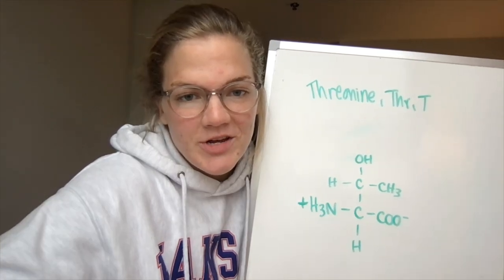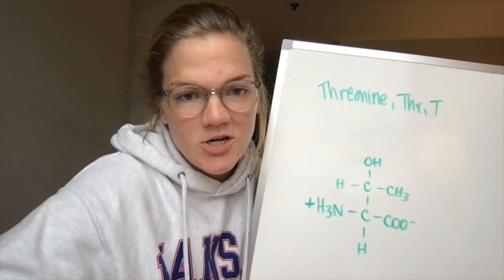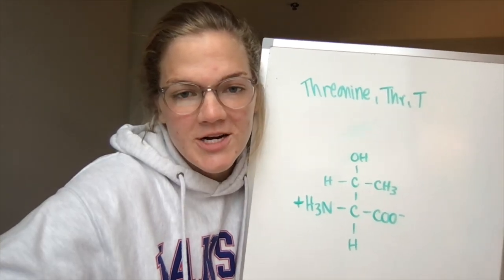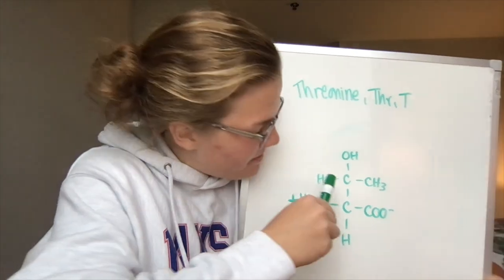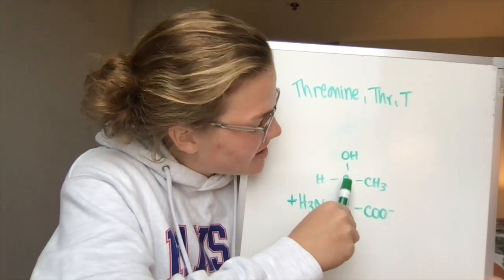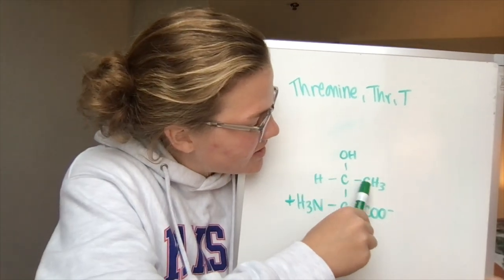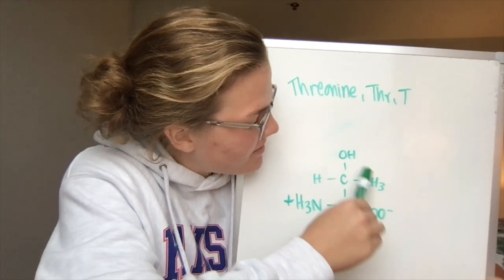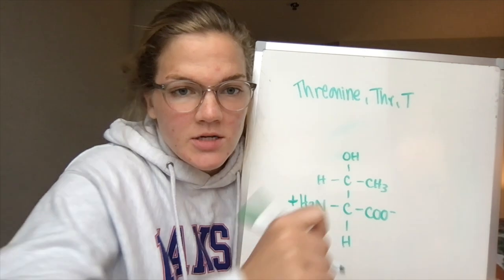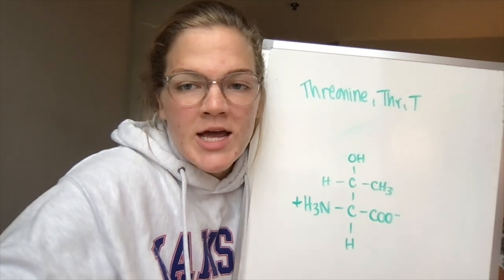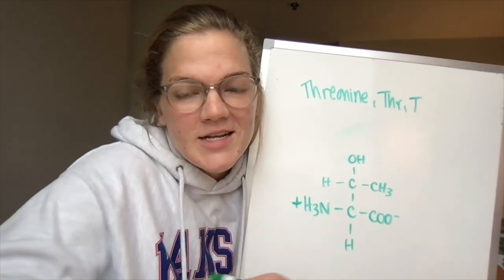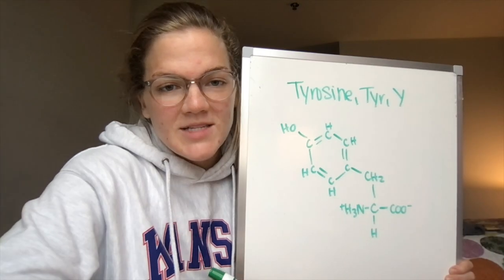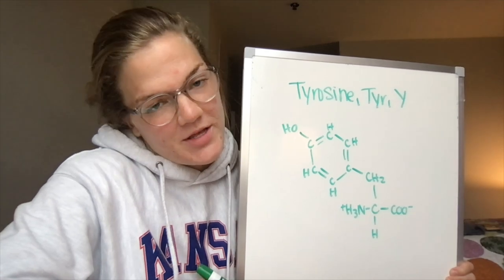For threonine, the three-letter abbreviation is THR. The one-letter is T. We got a little bit bulkier side chain here with this carbon, a methyl, and a hydroxyl. A fun fact is that threonine is found in eggs, milk, and gelatin.